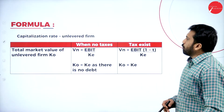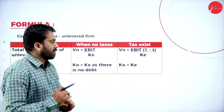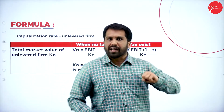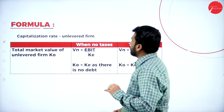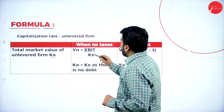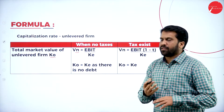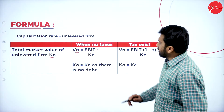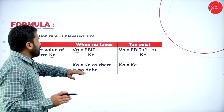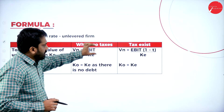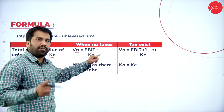Now we go directly to the formulas. Unlevered means there is no debenture. For the unlevered firm, the total market value VU equals EBIT divided by cost of equity (KE). If there is tax, it becomes EBIT × (1 − tax) divided by KE. Since there is no debenture, KO equals KE. If tax is present, use (1 − tax); if no tax, omit that factor.